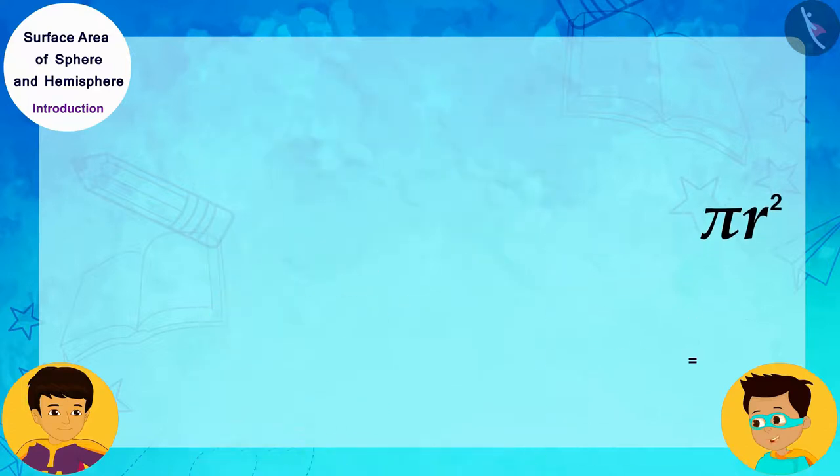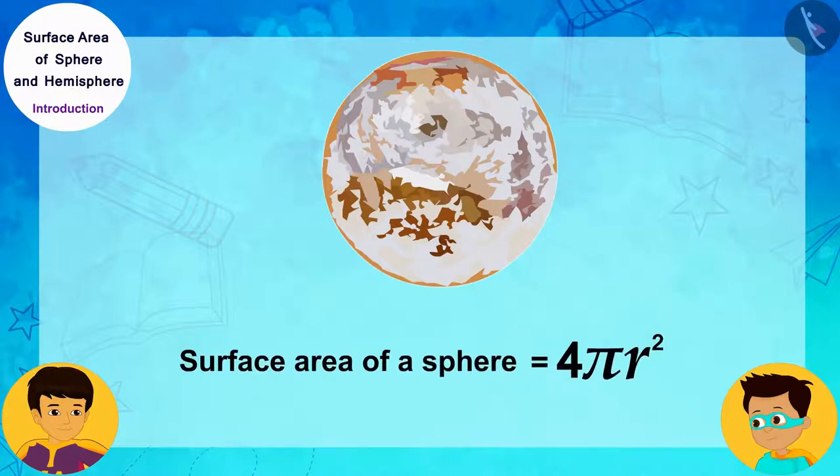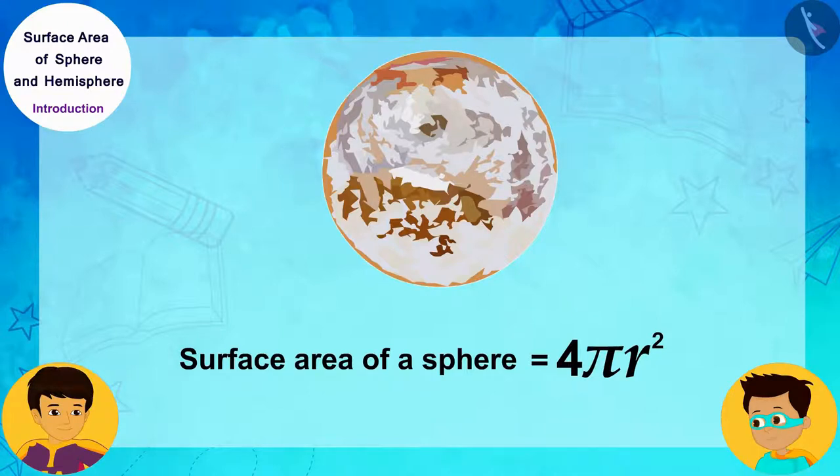We found the formula for the surface area of a sphere. The surface area of a sphere is four times pi R square, where R is the radius of the sphere.